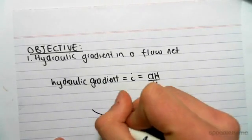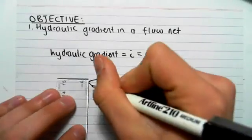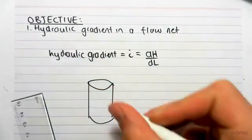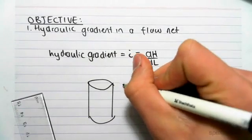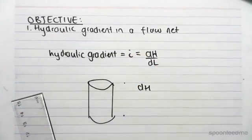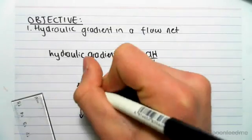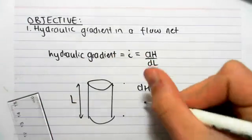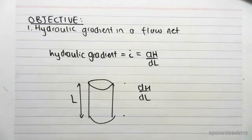So say for example, we had a cylinder, and we had a total head change. We could work out the head at that point, and we could find DH, the change in head. Then we would just measure the length, and that would be the change in length, and it would be very easy to find.